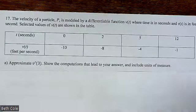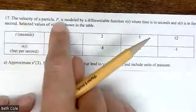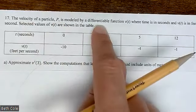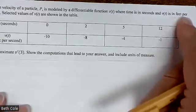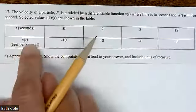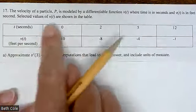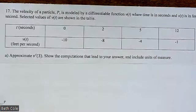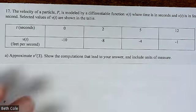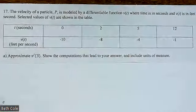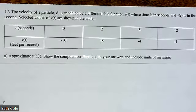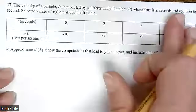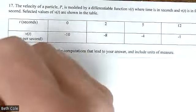Let's look at what they gave us. Velocity of particle P, differentiable, so everything's good. Time is in seconds, velocity is in feet per second — already feet per second, everything shown in the table. When you are given a table, you want to be like, yes. You can only get into so much trouble with these numbers. You can't do anything except work with these numbers. That's your whole world — that's all you've got. No matter what happens, everything that you need is right there.